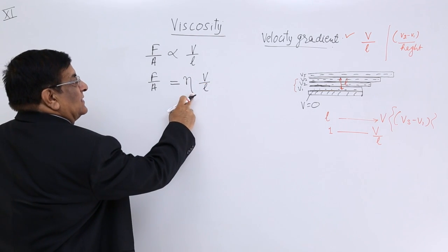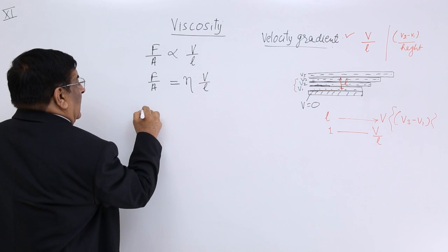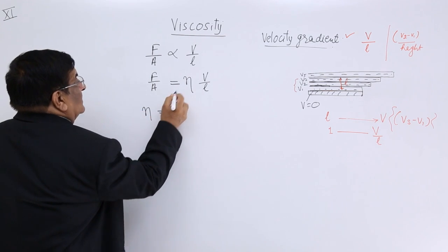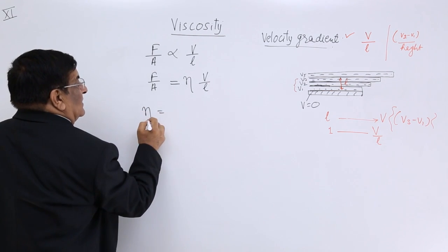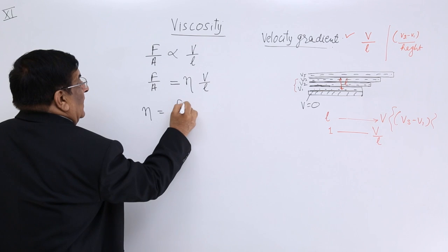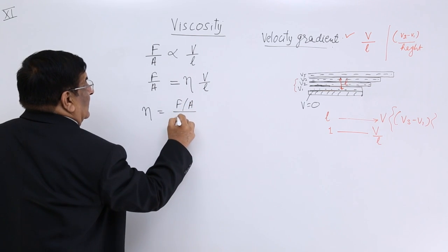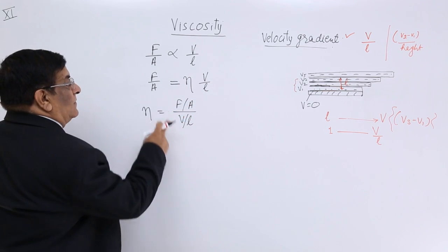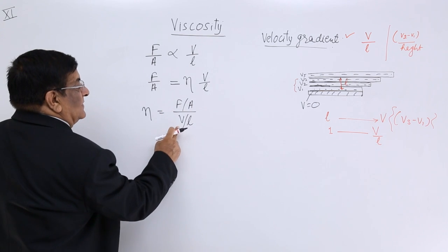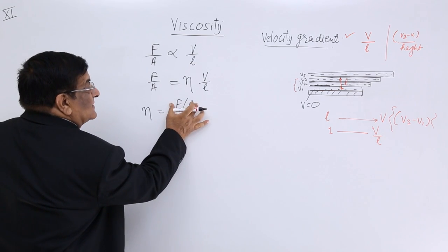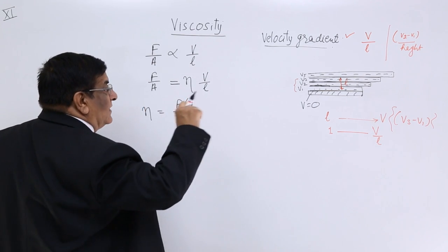Now we make it a relation of equality, and this is F upon A is equal to a constant V upon L. What is this constant? This constant we can find from this relation. This is eta. So eta is equal to F upon A divided by V upon L.